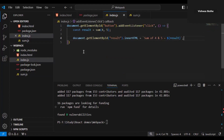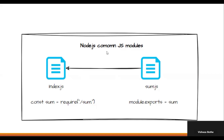Let's understand the Node.js CommonJS module approach, where we export code from sum.js and import it into index.js. The syntax is simple: we use module.exports and specify the appropriate method or function to export. In index.js, we simply use the 'require' keyword to get that required function. This is the Node.js CommonJS module approach.